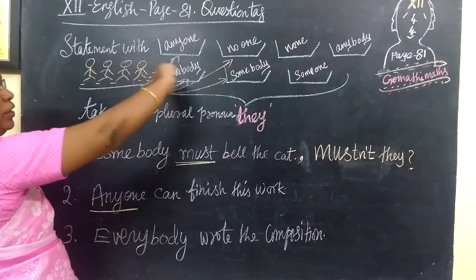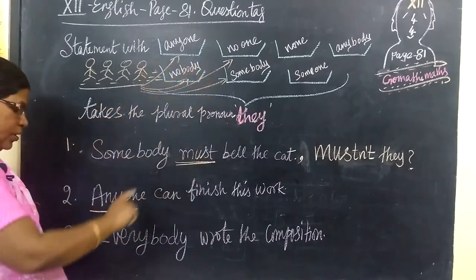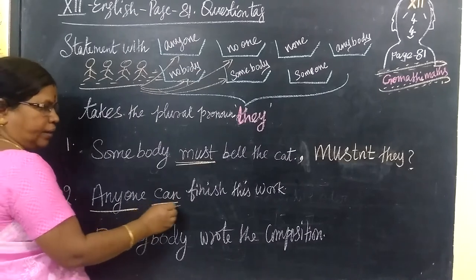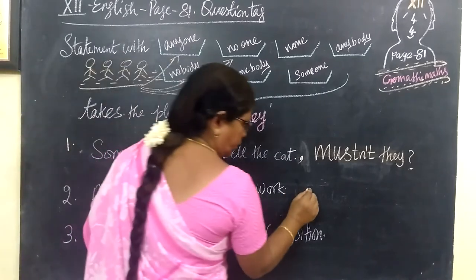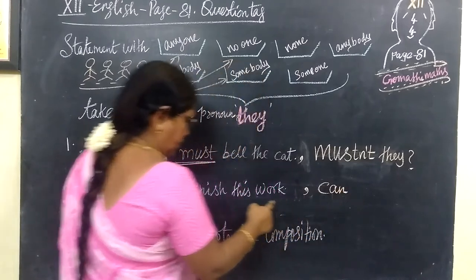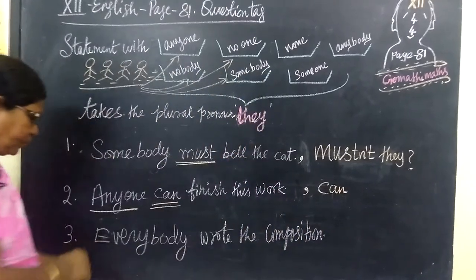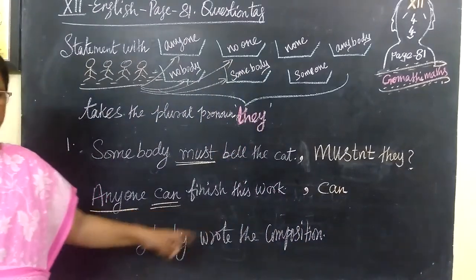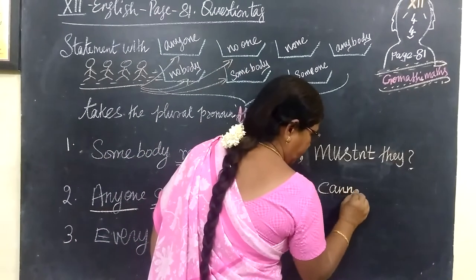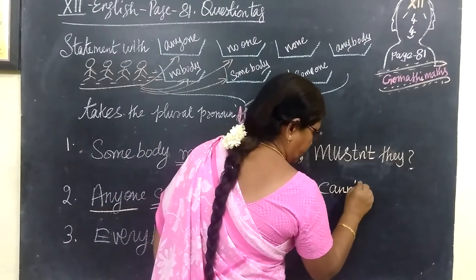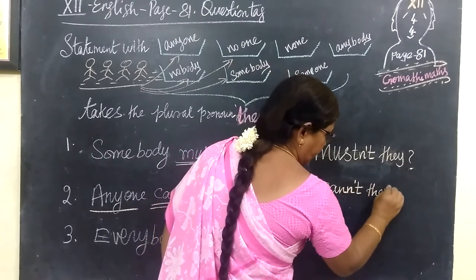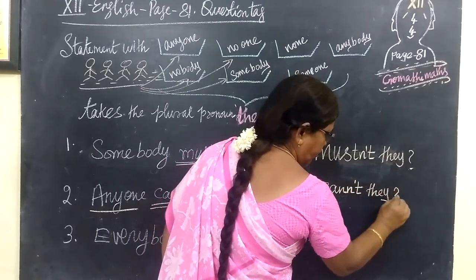Now come to the second one: 'Anyone in the table.' What is the verb? Can. So this is in positive form. You are using the negative tag. So: can't they? Here you write 'they' then question mark — can't they?